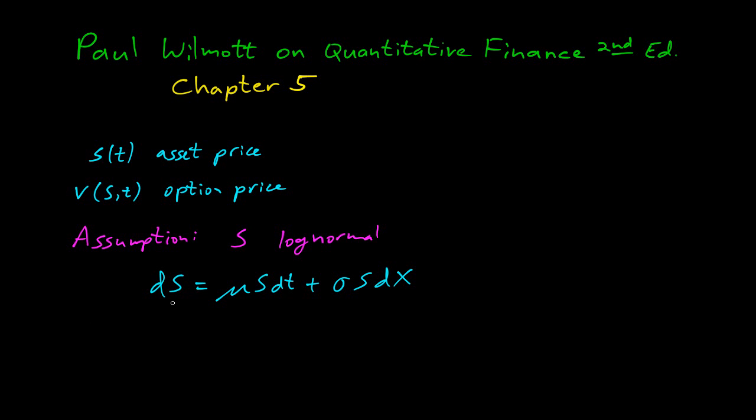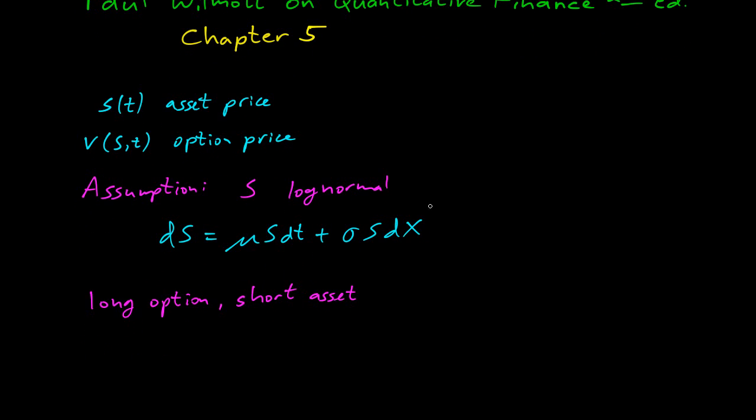Now the fundamental idea of the Black-Scholes equation is that we go long the option and short the asset. In particular, we want to take some position, so I'm going to call the position π. It's going to be long the option and then short some proportion of the asset. And the proportion we're going to call Δ. So Δ is going to be our hedging factor.